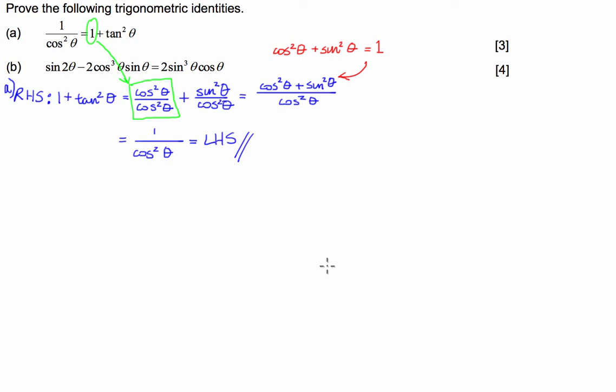Now on to part B where we have sin of 2 theta minus 2 cos cubed theta sin theta equals 2 sin cubed theta cos theta. For part B, I'm going to be working on the left hand side and trying to make it equal to the right hand side. So let's start with writing down our left hand side.